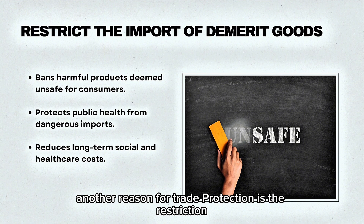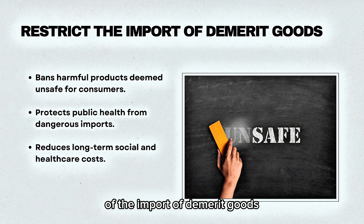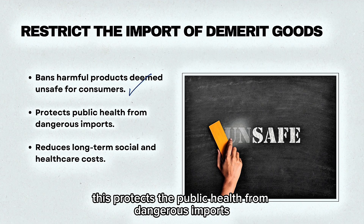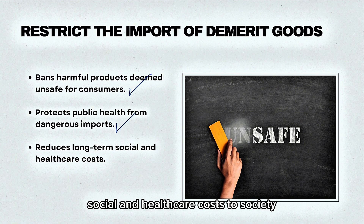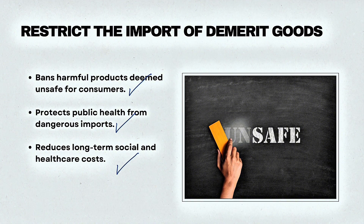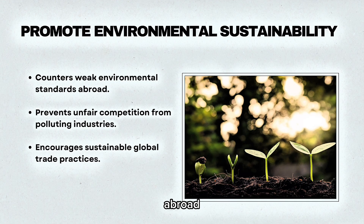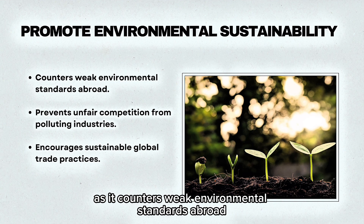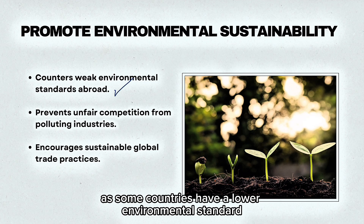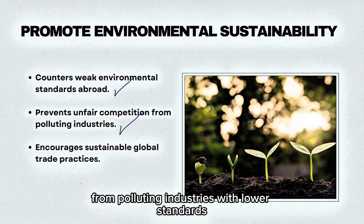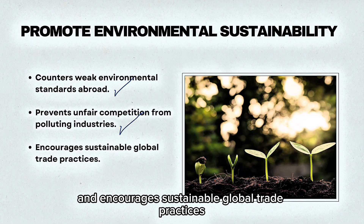Another reason for trade protection is to restrict the import of demerit goods — this bans harmful products deemed unsafe for consumers, protects public health from dangerous imports, and reduces long-term social and healthcare costs. Trade protection also promotes environmental sustainability by countering weak environmental standards abroad, preventing unfair competition from polluting industries with lower standards, and encouraging sustainable global trade practices.